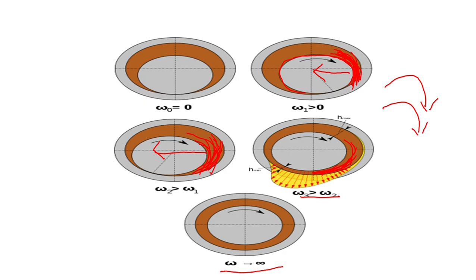As shaft speed increases to a very high value, the lubricant will start gathering over here and will apply an upward force on the shaft in this direction. The shaft will then be completely separated from the bearing surface because of the squeezing effect of the lubricant in the wedge-shaped clearance space between the journal and the bearing.